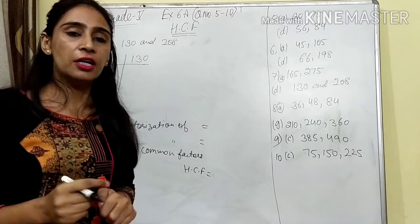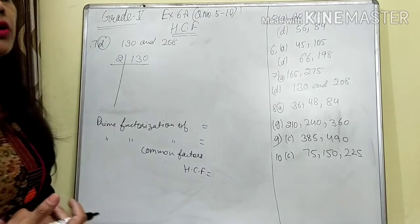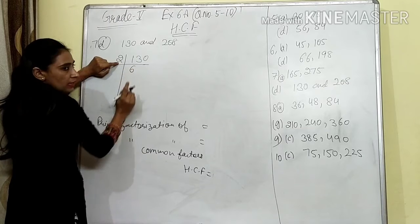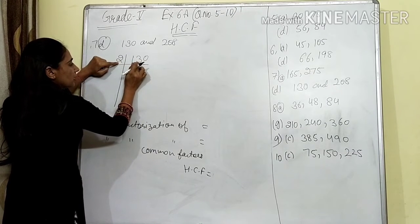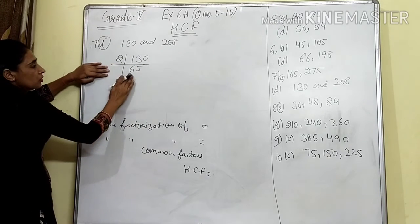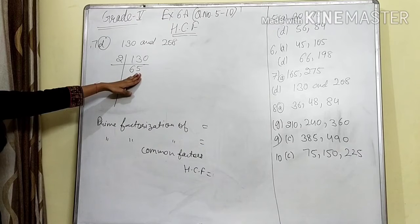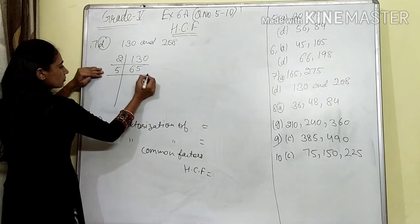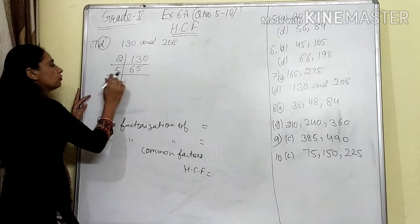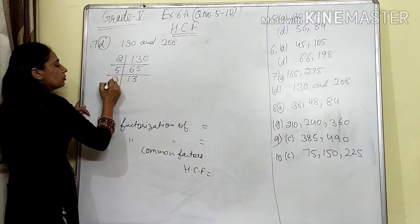For 130: the last digit is 0, so it is an even number and divisible by 2. Divide 130 by 2 — you get 65 as quotient. Now 65: sum of digits is 11, not divisible by 3. Last digit is 5, so divisible by 5. Five thirteens are 65, and 13 ones are 13. 13 is a prime number. So prime factorization of 130 is 2 × 5 × 13 × 1.